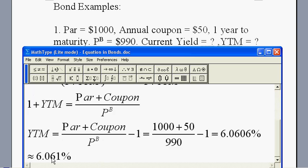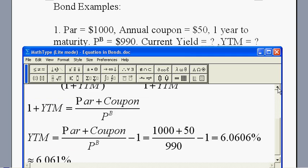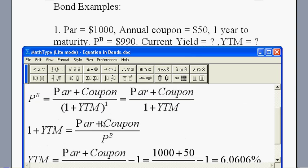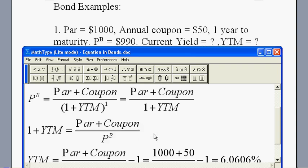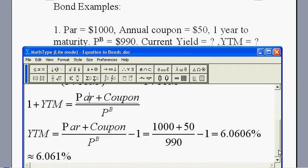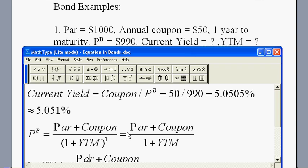Because when we calculate the yield to maturity, we actually take into account the appreciation in the par from this bond price, $990 to $1000. We take this appreciation into account. That's why the yield to maturity is higher than the current yield. In the current yield calculation we only think about the coupon. That's our first example.